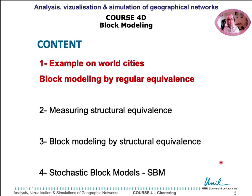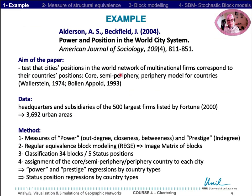First, we will present an example to emphasize the interest in using such models. The example is from Alderson and Beckfield, studying power and position in the world system of cities. The aim of the paper is to test cities' positions in the world network of multinational firms and see if it corresponds to their country's position — core, semi-periphery, and periphery — according to the Wallerstein model.